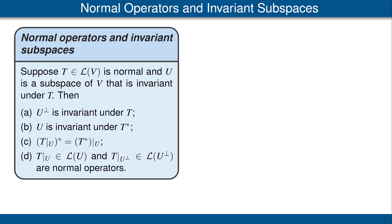Suppose U is a subspace of V that is invariant under T. Then we have four conclusions. First, the orthogonal complement of U is invariant under T. Second, U is invariant under the adjoint of T. Third, the adjoint of T restricted to U is equal to the adjoint of T restricted to U. Fourth, T restricted to U is a normal operator on U, and T restricted to the orthogonal complement of U is a normal operator on the orthogonal complement of U. For this last conclusion, we need part A for it to even make sense, because we need T restricted to the orthogonal complement of U to be an operator on that space. Part A gives us exactly that.